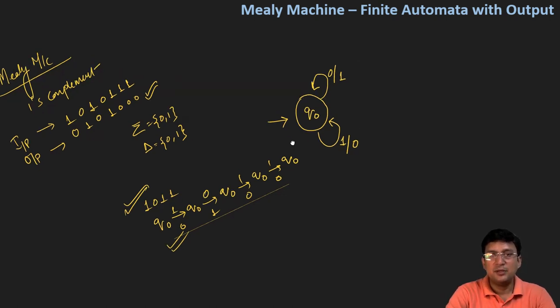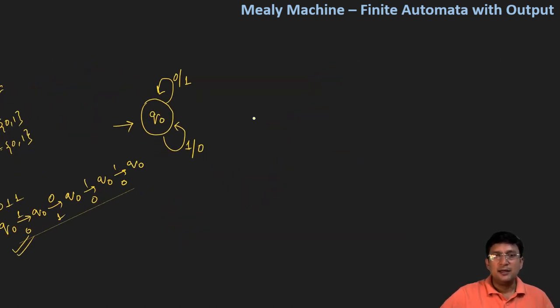So whenever I have been asked to design this kind of machine, I should definitely design the transition table, which says that q0 is the start state. And if I get a symbol zero or I get a symbol one - so if I get a symbol zero, I go to state q0 and produce the output one.